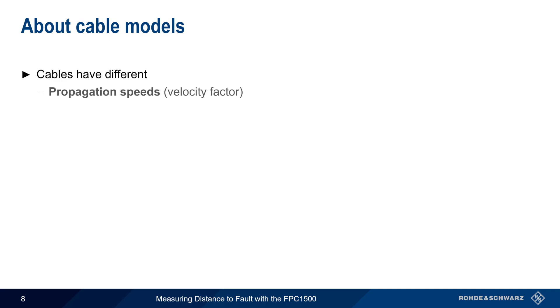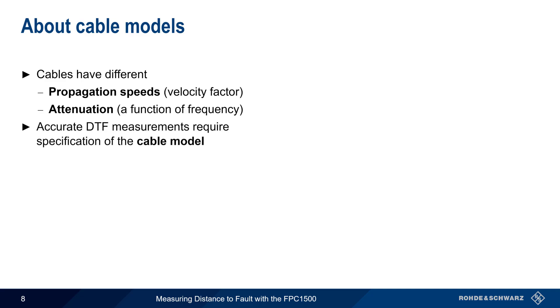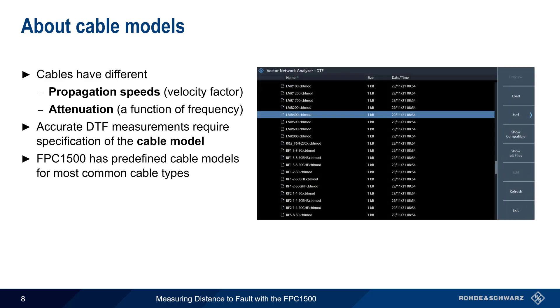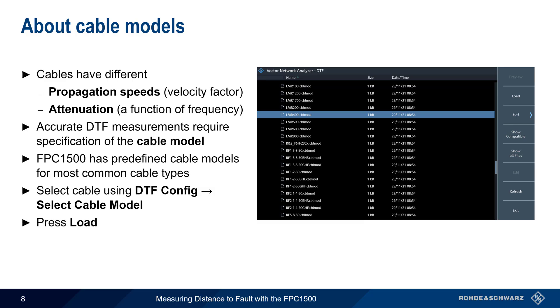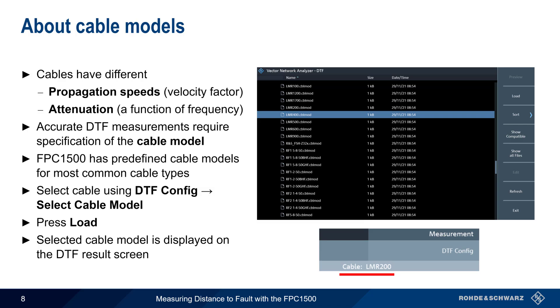The next step is specifying a cable model. Coaxial cables with different conductor spacings and different dielectrics will propagate signals at different speeds — this is called the velocity factor of a cable. They will also have different amounts of attenuation, which is often a function of frequency. Therefore, accurate distance to fault measurements require the specification of a cable model, which describes both the velocity factor and the frequency-specific loss of the cable under test. The FPC-1500 comes preloaded with models for about 100 of the most common cable types. These can be chosen using DTF Config > Select Cable Model, and then pressing Load. The selected cable model is displayed at the top of the distance to fault results screen.